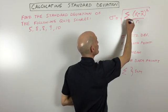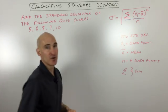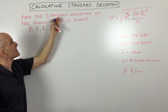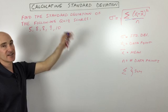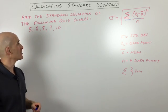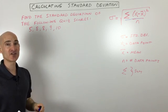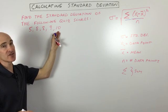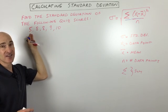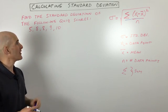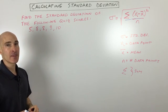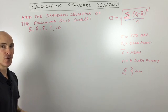Well, let's go ahead and do an example. So find the standard deviation of the following quiz scores: 5, 8, 8, 9, and 10. Just imagine that you had five people, they took a quiz, let's say it was a 10-point quiz. These are their scores. Somebody did great, somebody did not so great. But you want to just get an idea about what the standard deviation is. This is a small amount of data, just to illustrate how to go through and do this.